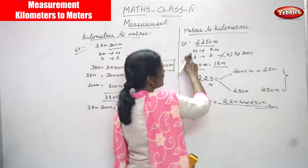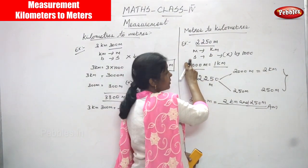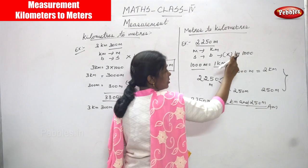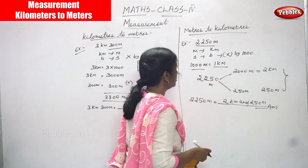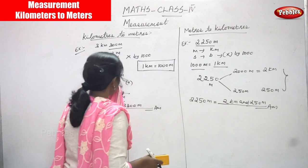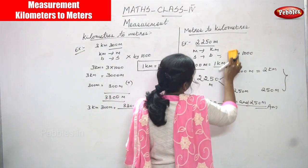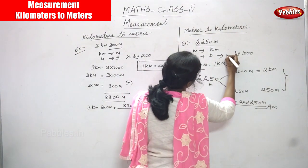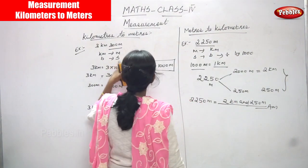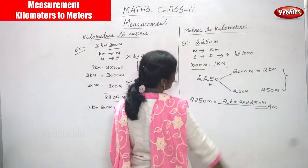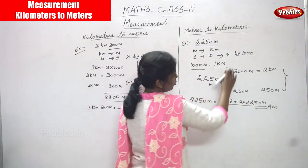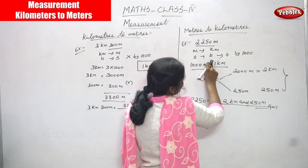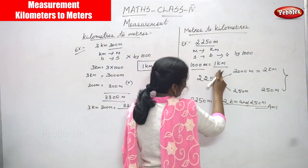Sorry — I made a mistake earlier. The correct rule is: bigger to smaller means you multiply by 1000; smaller to bigger means you divide by 1000. By mistake I said the wrong thing, so don't do the same mistake. Smaller to bigger means divide by 1000.